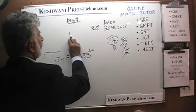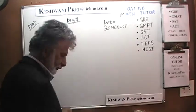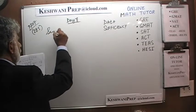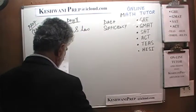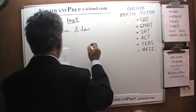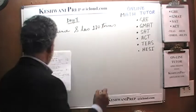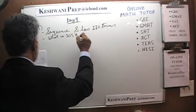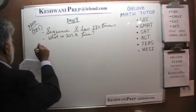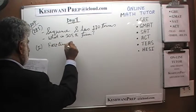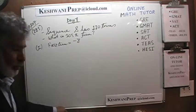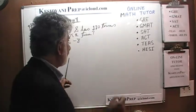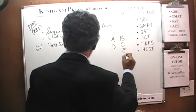Problem 285 tells us that sequence S has 120 terms. The question is: what is the 105th term? The first statement tells us that the first term is negative 8. Knowing what the first term is and knowing there are 120 terms does not enable us to figure out the 105th term. The first statement by itself is not enough, so the answer cannot be A or D.